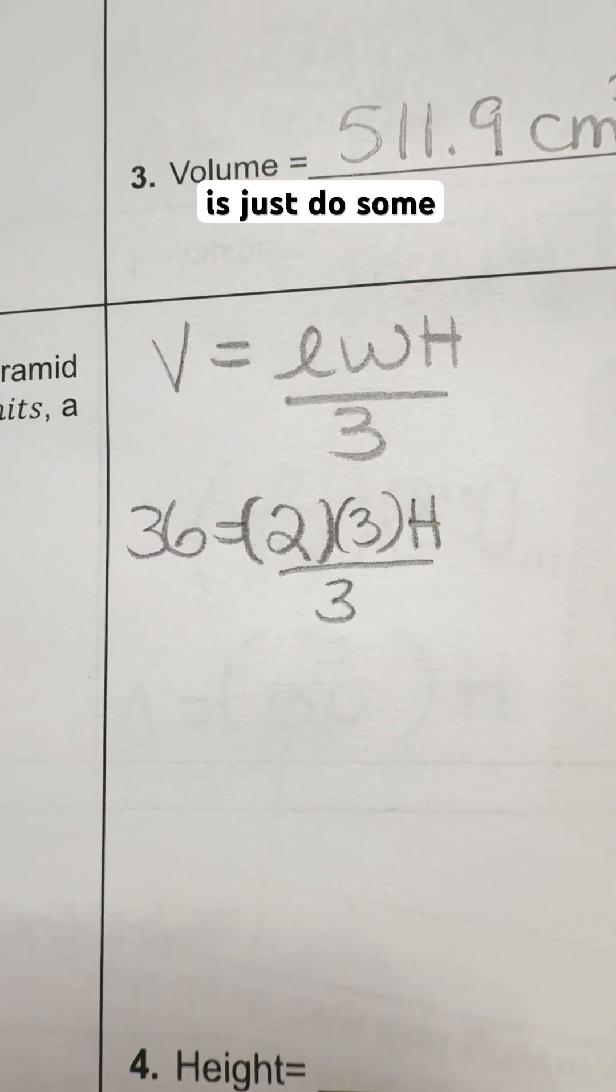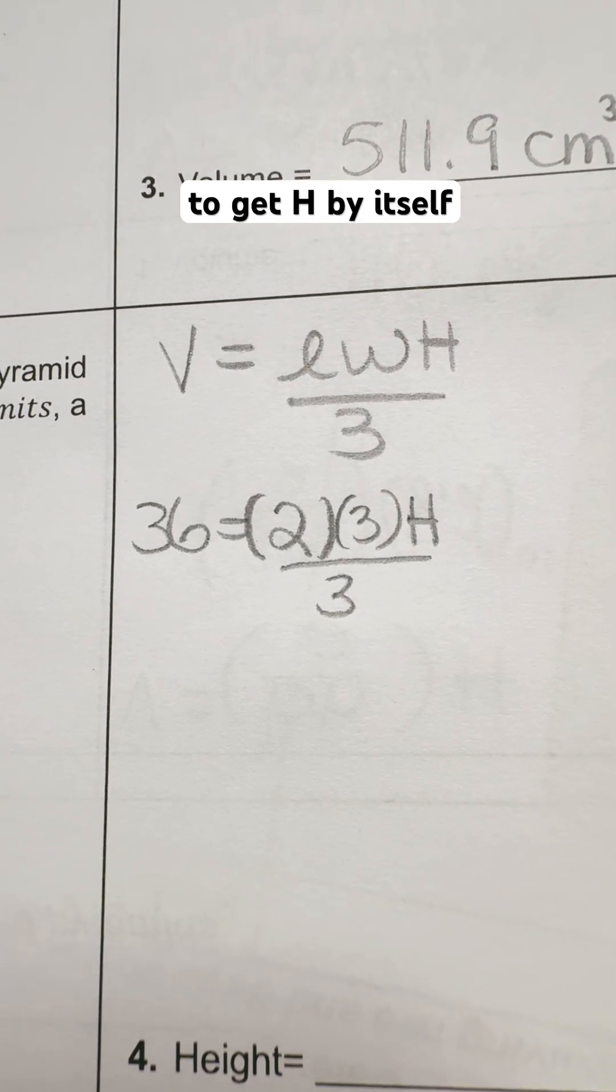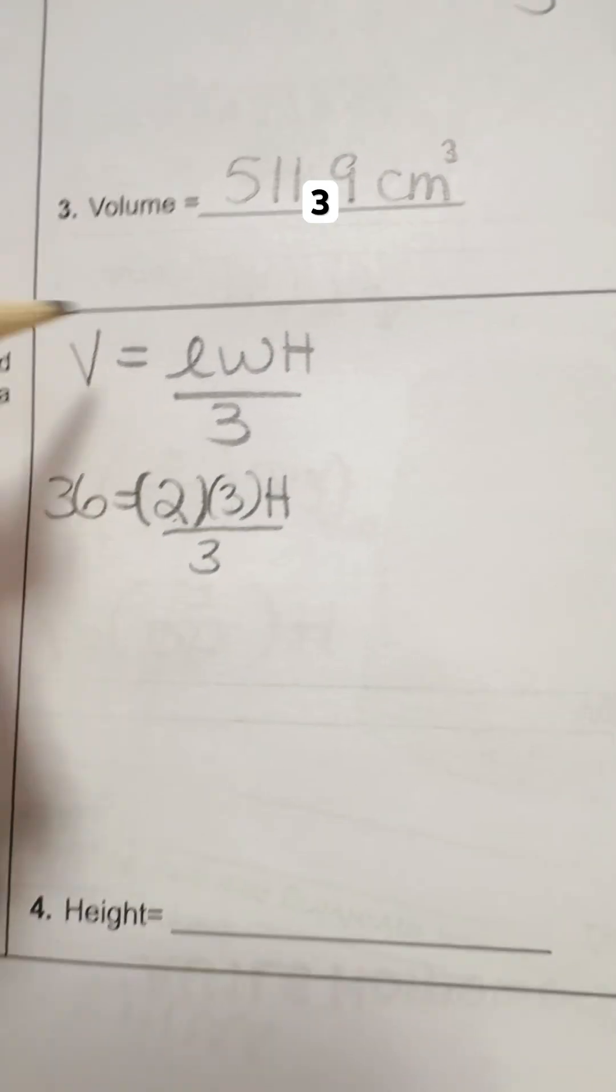So all I'm going to do is just do some basic calculations to figure out what's missing to get H by itself. So I'm going to start off with the multiplication right here. 2 times 3 is 6.